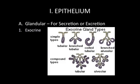Here we have a type of gland called an exocrine gland — one of two types of glands in the body. An exocrine gland has a duct which allows it to secrete or excrete a material into a body cavity or surface, and here you can see the duct coming out of each one of these.